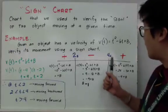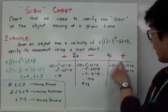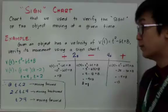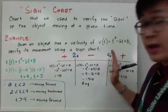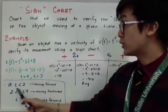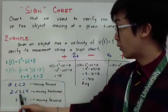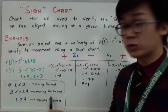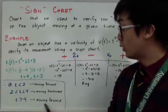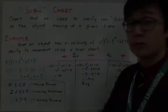To summarize the sign chart: at time less than 2 seconds, the particle is moving forward because the velocity sign is positive. Between 2 and 4 seconds, the particle is moving backwards because the velocity sign is negative. At time greater than 4 seconds, the velocity sign is positive, so it's moving forward. This is how you summarize and check the movement of an object using velocity.